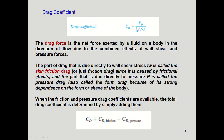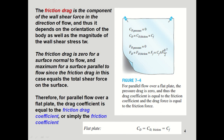The shear stress develops at the surface of the plate, producing a drag force called skin friction drag, since it is caused by frictional effects. The part due directly to pressure p is called pressure drag. When both friction and pressure drag coefficients are available, the total drag coefficient is determined by simply adding them: C_D_total = C_D_friction + C_D_pressure. Frictional drag is zero for a surface normal to the flow and maximum for a surface parallel to the flow, since in that case friction drag equals the total shear force on the surface.